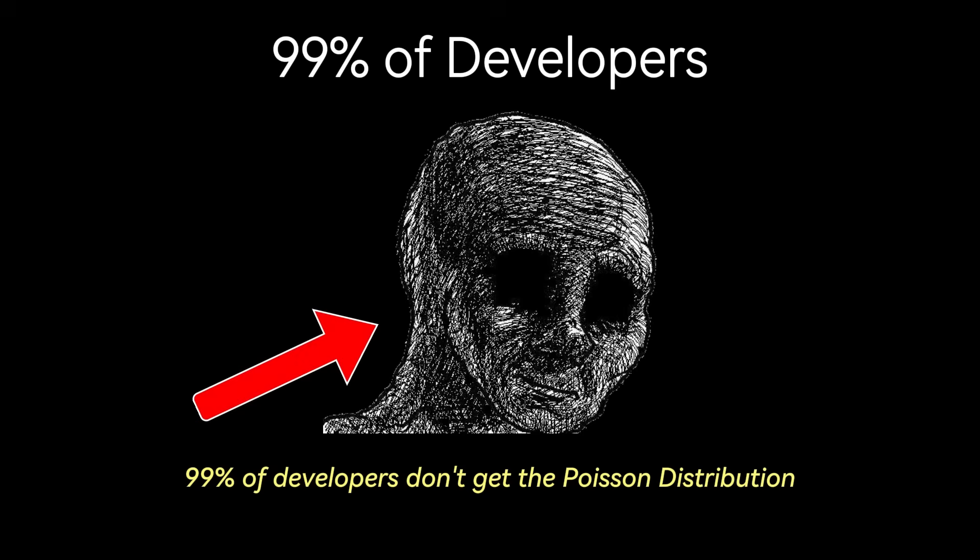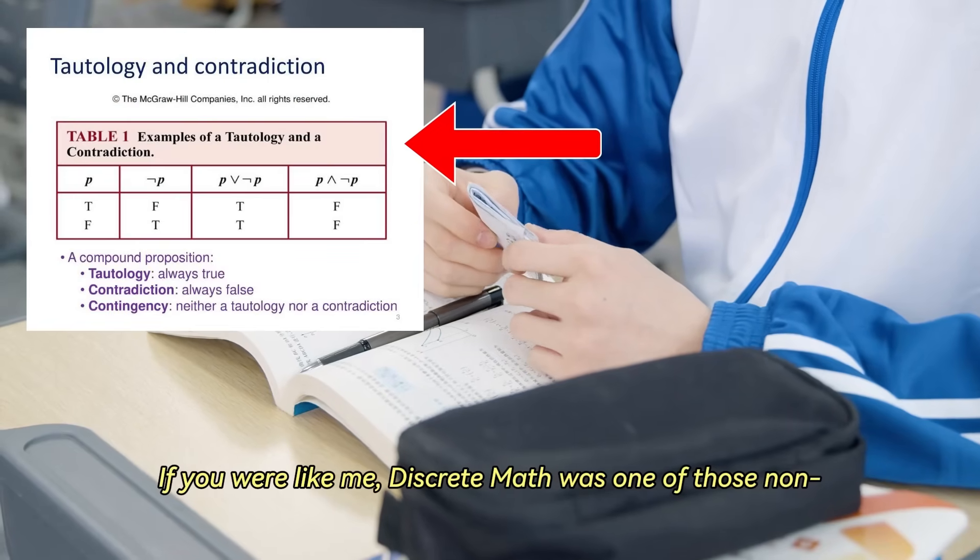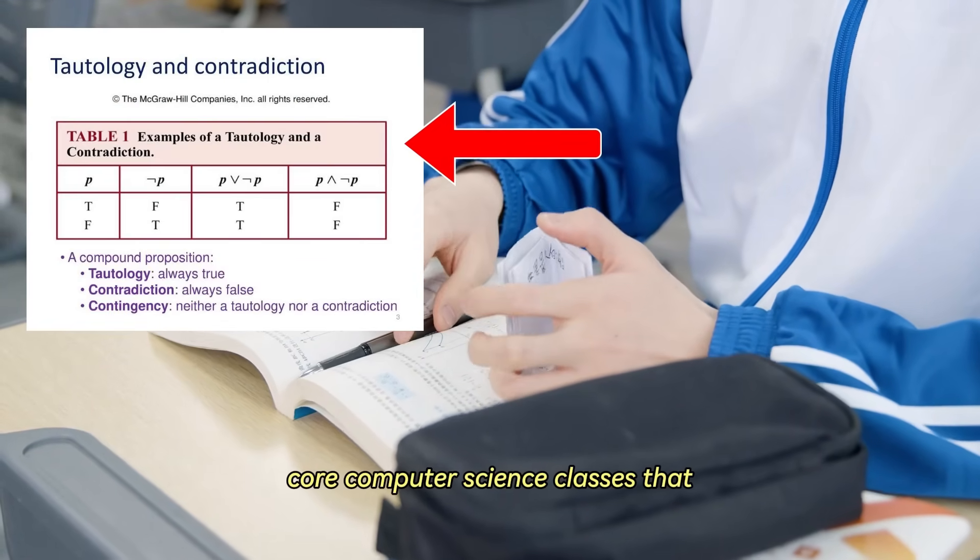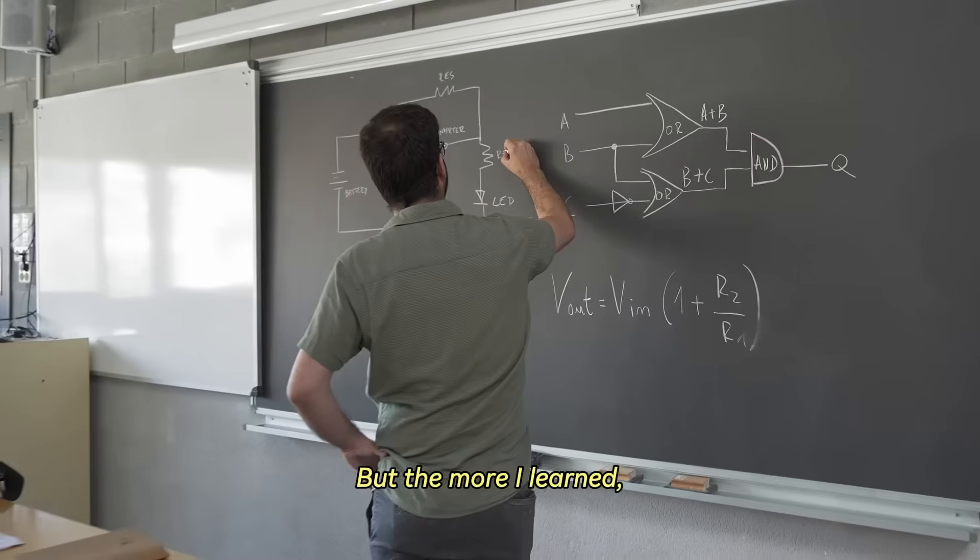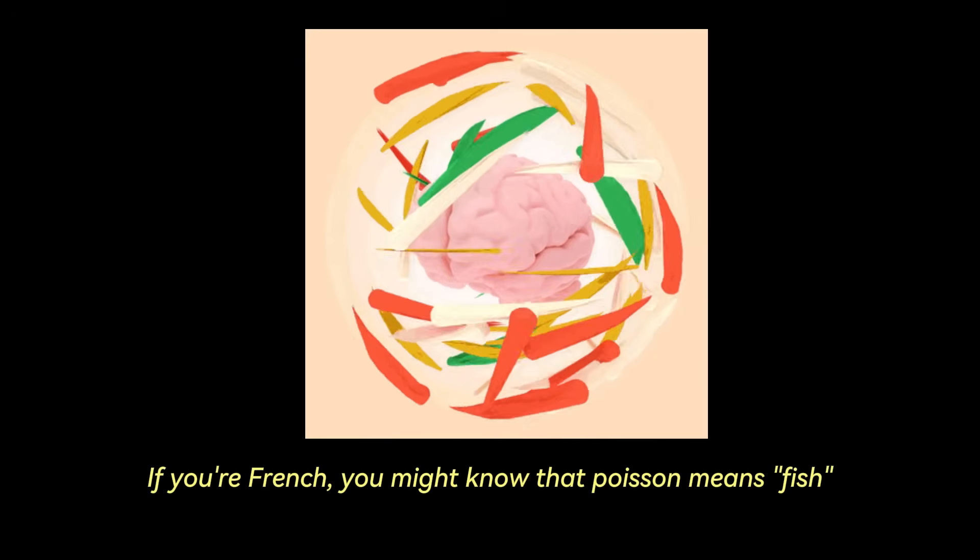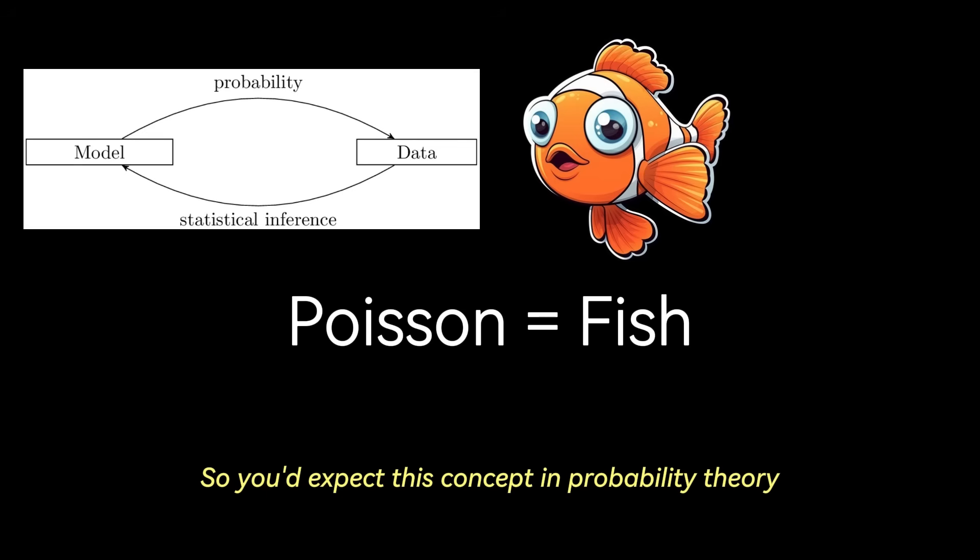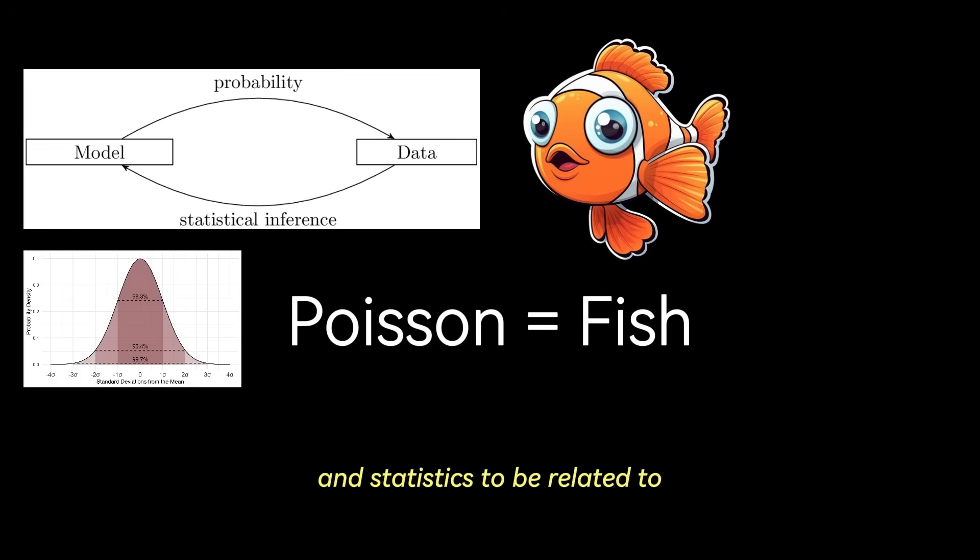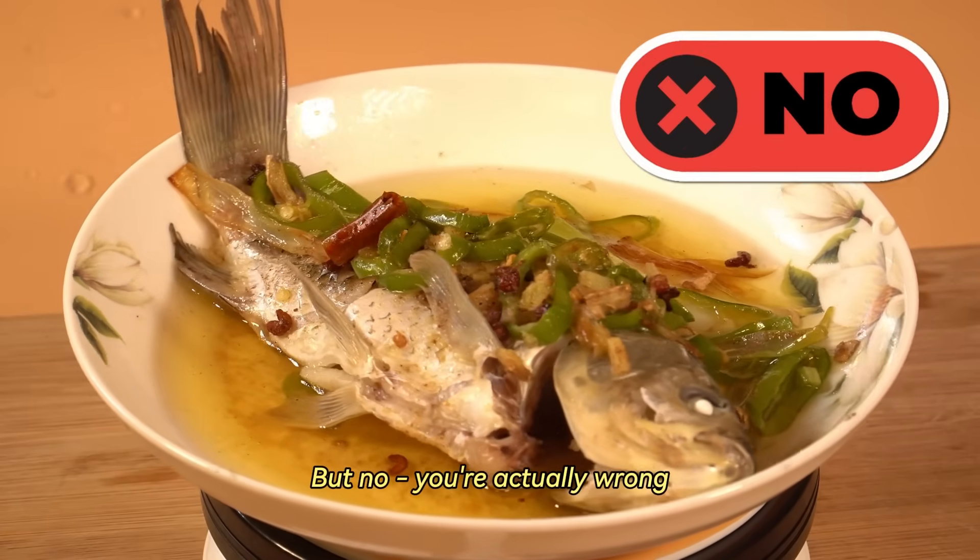99% of developers don't get the Poisson distribution. If you were like me, discrete math was one of those non-core computer science classes that you had to take in first or second year that you absolutely hated. But the more I learned, the more I started to see the beauty of it all. If you're French, you might know that Poisson means fish, so you'd expect this concept in probability theory and statistics to be related to the mass distribution of fish, like salmon or Atlantic cod. But no, you're actually wrong.